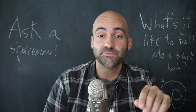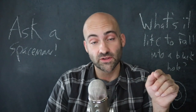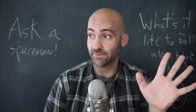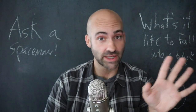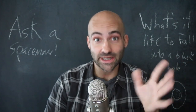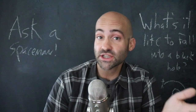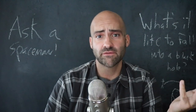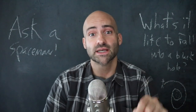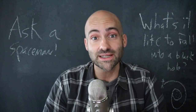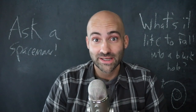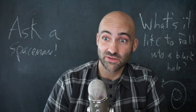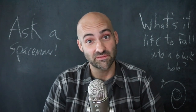You've gone and done it, haven't you? You've fallen into a black hole. I warned you, because once you fall into a black hole you can't get out, so you're going to die — and soon. But you just had to see what's on the other side of an event horizon. Guess what? You're going to be disappointed, because the other side looks a lot like this side.